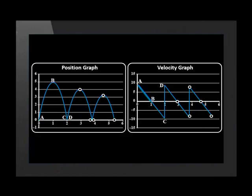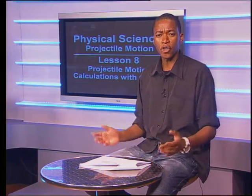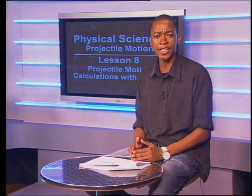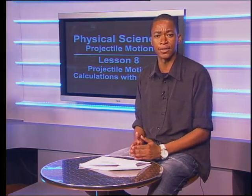Is the gradient of line AB the same as the gradient of line BC on the velocity-time graph? Yes. They are equally steep and slope in the same direction — negative slope. This is because the ball is in free fall for AB and BC, so the ball is accelerating at negative 10 meters per second squared for both intervals.